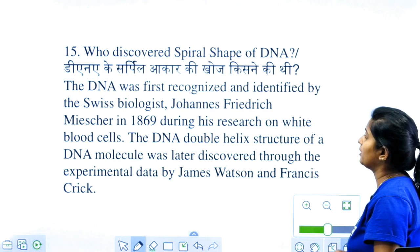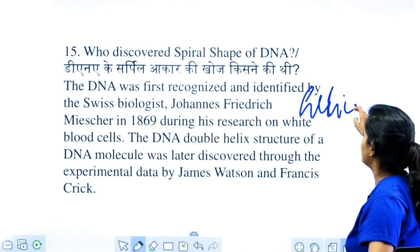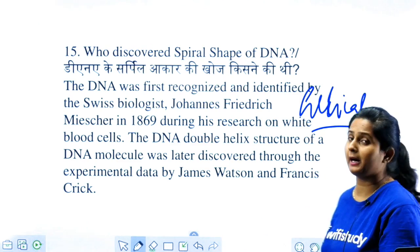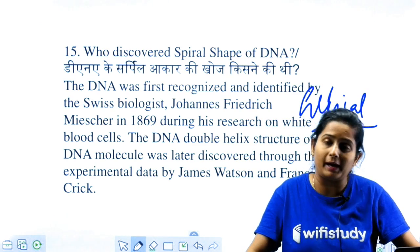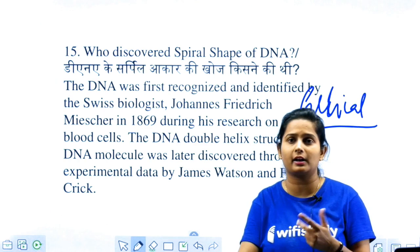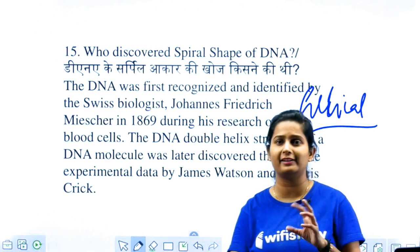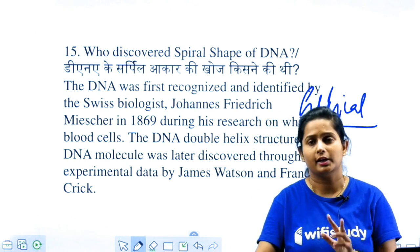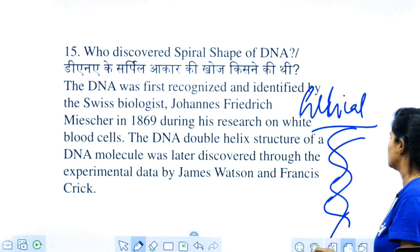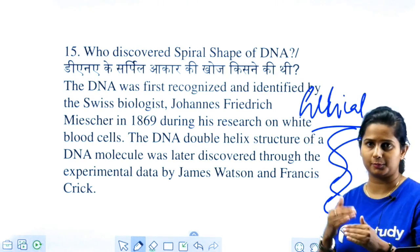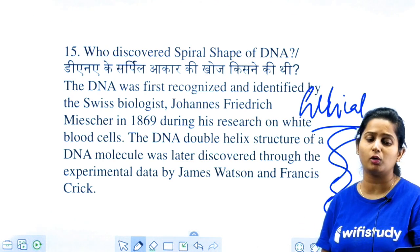Who discovered the spiral shape of DNA? You can also write helical shape. First, DNA was revealed by Frederick Miescher. After that, many scientists studied it in detail. James Watson and Francis Crick described the helical structure of the whole DNA. In 1953, Watson and Crick also received a Nobel Prize for this.